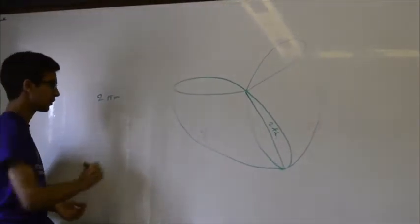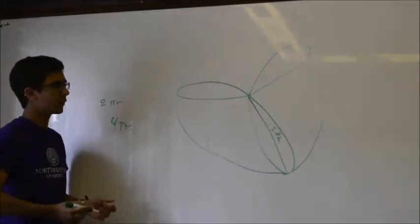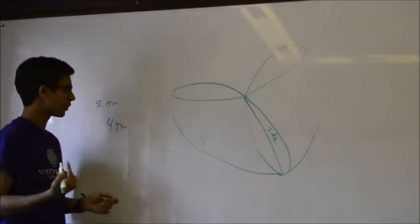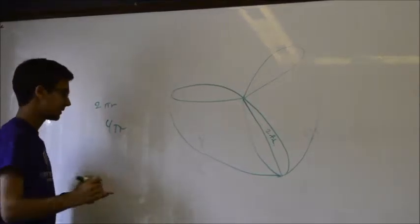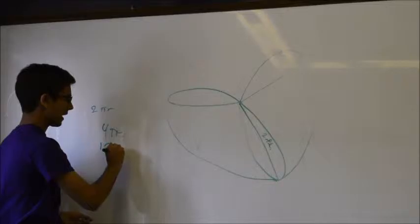So here we have a fan where the tip of the blades are two feet from the center. So if we think about this as one big circle, the radius of it is two.